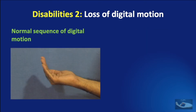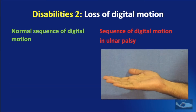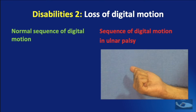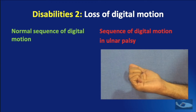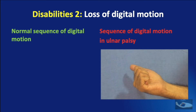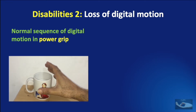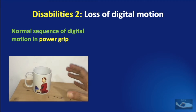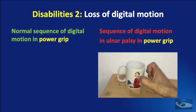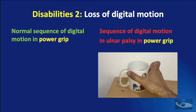In the normal sequence of digital motion, the metacarpophalangeal joint flexes first, then the IP joints flex via the long flexors. In Ulnar Nerve Palsy, the long flexors first flex the DIP joint, then the PIP joint, and only after these are fully flexed does the MCP joint flex. Normally when grasping an object, the MCP joint flexes first and IP joints tighten the grip. In Ulnar Nerve Palsy, because of this reversed sequence, the IP joints are already flexed when the hand reaches the object and it cannot hold it properly.